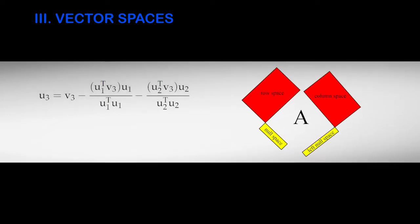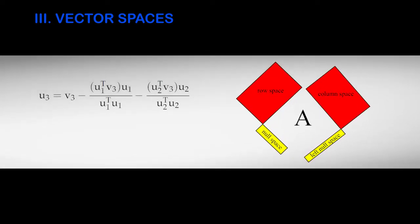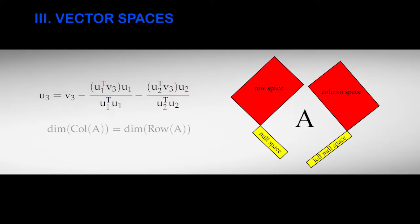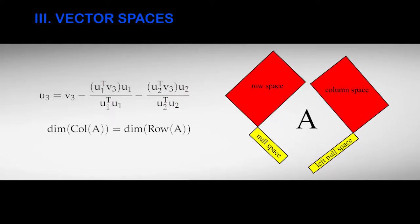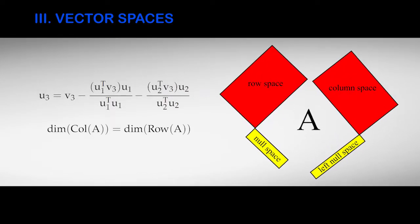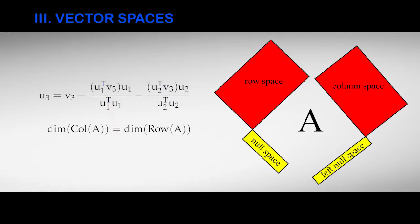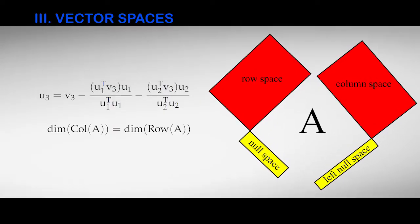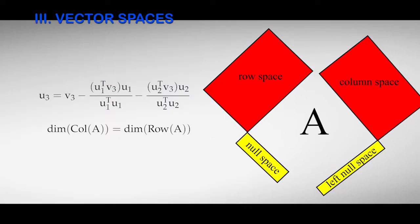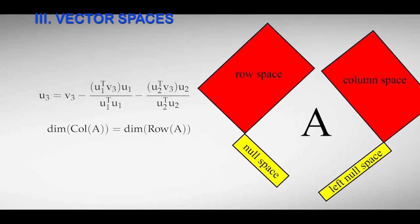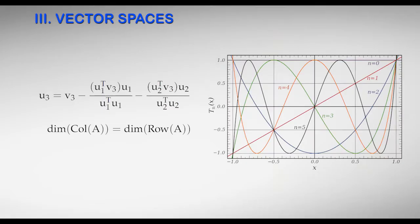In the third module, we'll become more abstract and learn about vector spaces and the vocabulary of linear algebra. These abstract concepts are widely used and will make it easier to understand more advanced engineering mathematics, such as Fourier analysis and orthogonal polynomials.